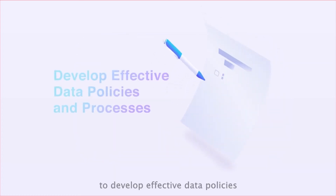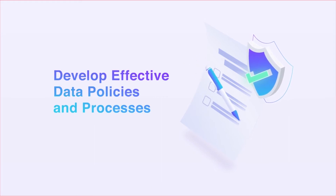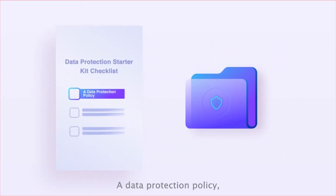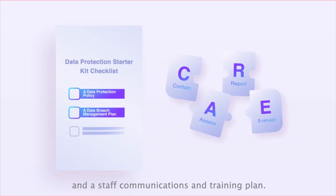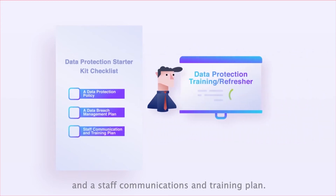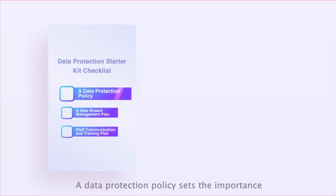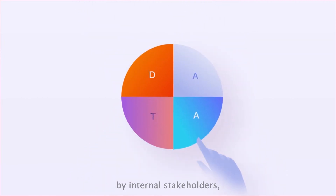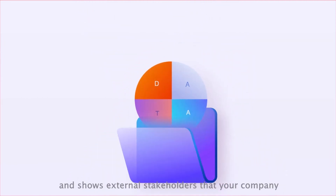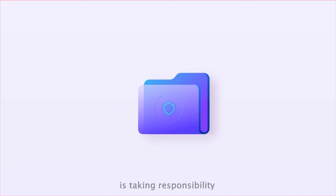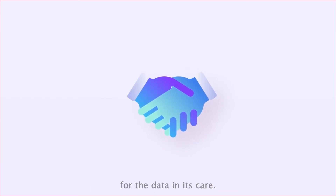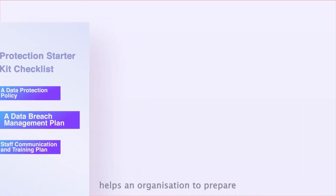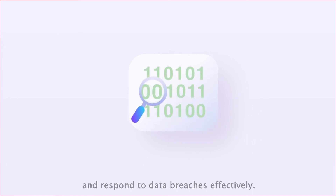Next, to develop effective data policies and processes, your business needs a data protection policy, a data breach management plan, and a staff communications and training plan. A data protection policy sets the importance and clarity of how data should be handled by internal stakeholders, and shows external stakeholders that your company is taking responsibility for the data in its care. A data breach management plan helps an organisation to prepare and respond to data breaches effectively.